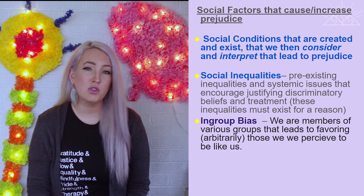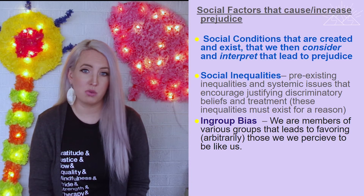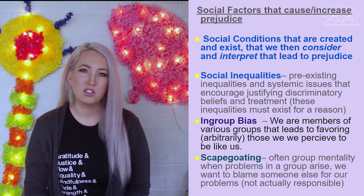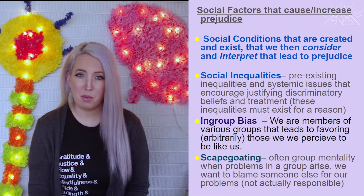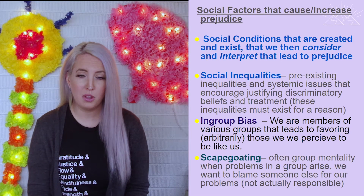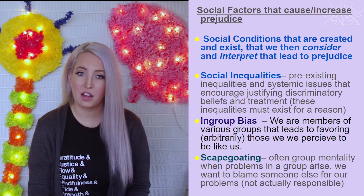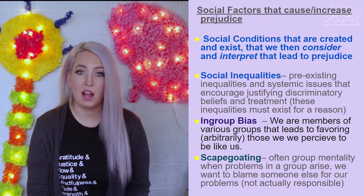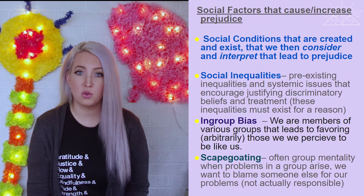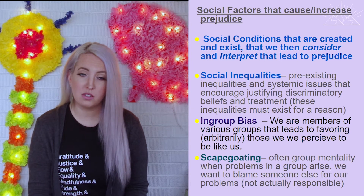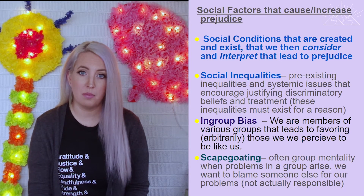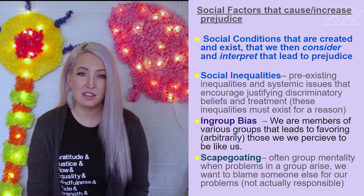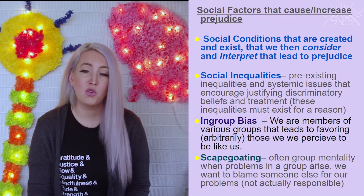The final social factor that leads to prejudice is scapegoating, which we see throughout history — where problems in a society are often blamed on members of the out-group. The social factor of societal ills leads to the cognitive question of who is responsible. Oftentimes people place blame on someone other than themselves, which is what leads to scapegoating — blaming out-group members even when the problems are not their fault.